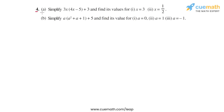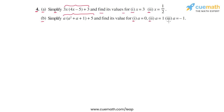Question 4, part a says: simplify the expression 3x times (4x minus 5) plus 3, and find its values for x equal to 3 and x equal to half. Part b says: simplify a times (a squared plus a plus 1) plus 5, and find its value for a equal to 0, a equal to 1, and a equal to minus 1. Let's start with part a.